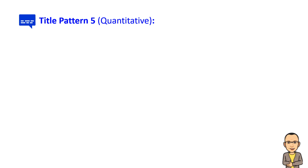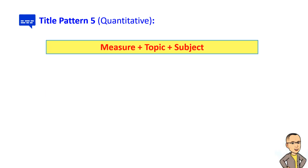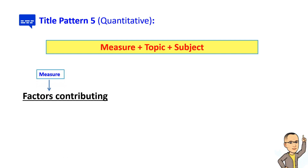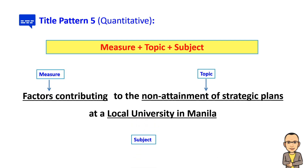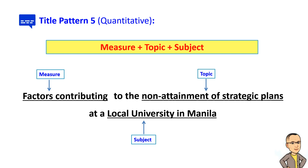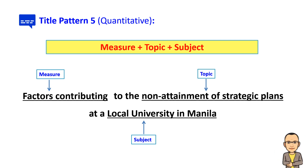The fifth pattern is also well suited for quantitative studies employing measures, but with the subject and topic reversed. In this pattern, the format is: measure + topic + subject. For example, the measure is 'factors contributing to a certain outcome,' the topic is 'non-attainment of strategic plans,' and the subject is 'a local university in Manila.' This reversed format adds precision to quantitative research design by prioritizing the focal measure and providing context through the topic, ultimately grounding the study within a specific subject or population.